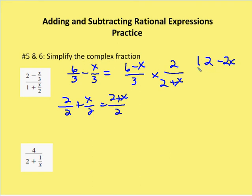I distribute the 2: 2 times 6 is 12, minus 2 times x is minus 2x, and I have 2 times 3 which is 6, plus 3x. I have no common factors in each of the four terms other than 1. So I'm going to leave my result as 12 minus 2x over 6 plus 3x.